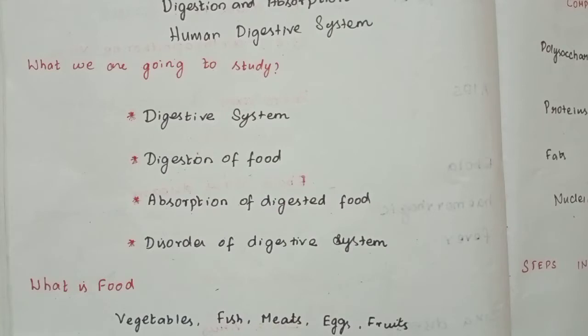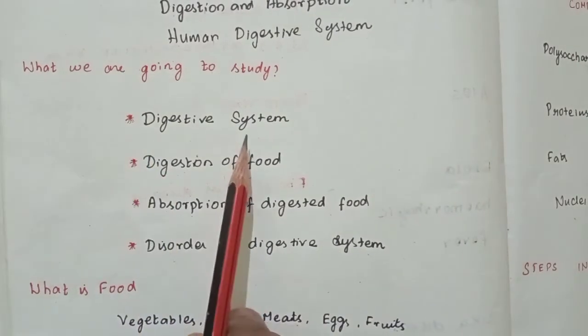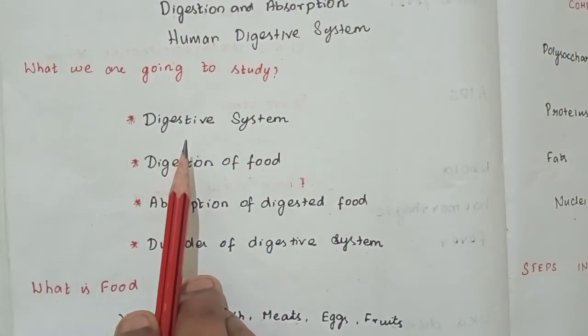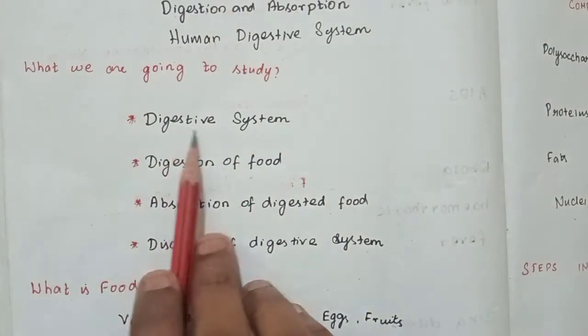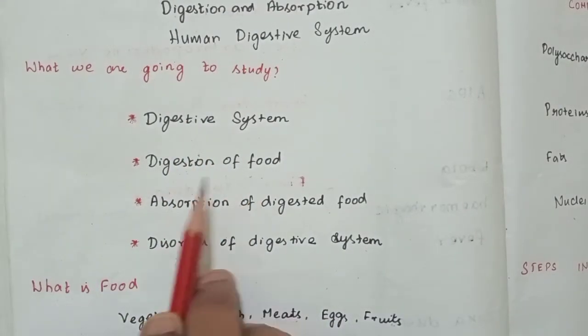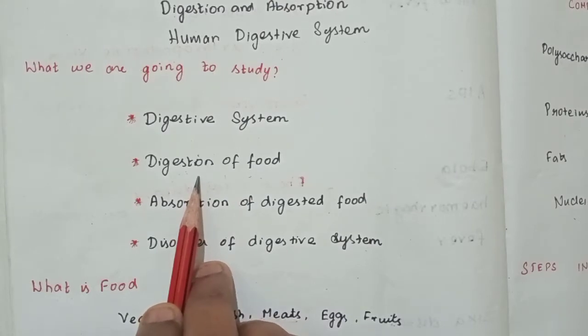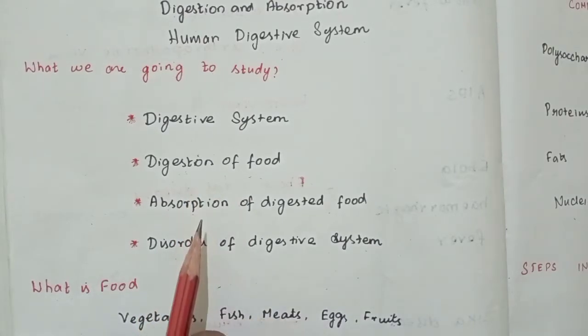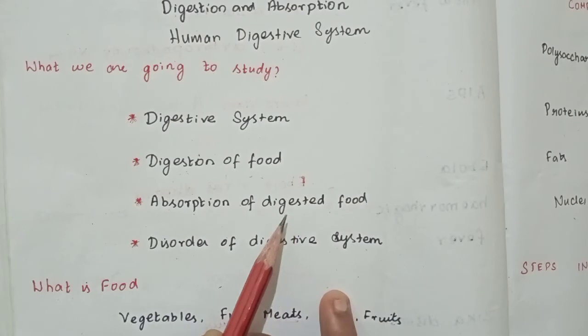So let's do this. Number 1: Digestive System. Number 2: Digestion of food. Number 3: